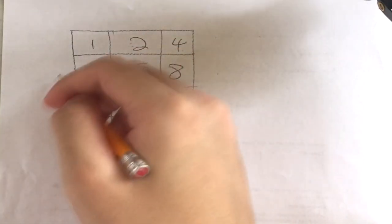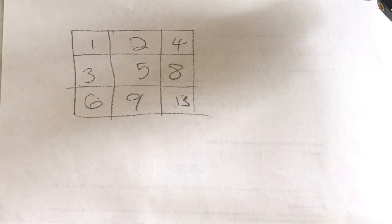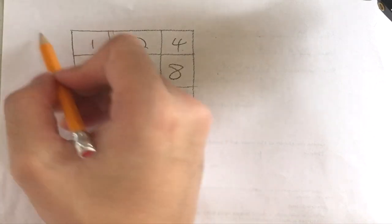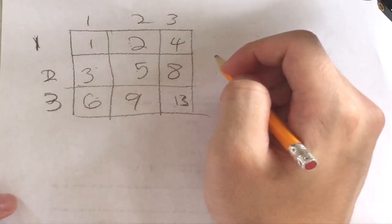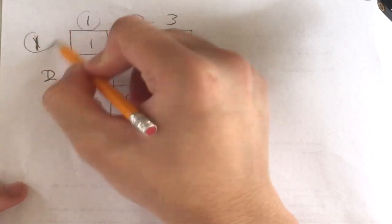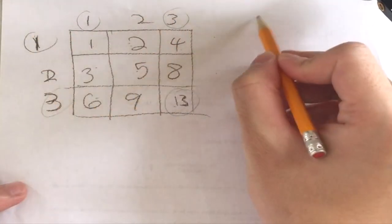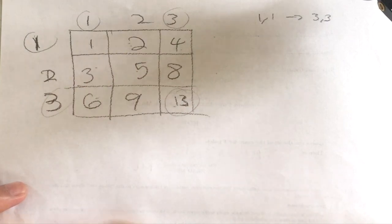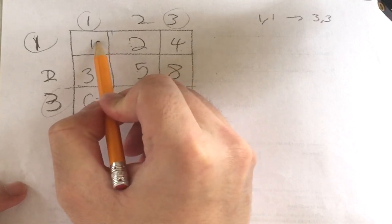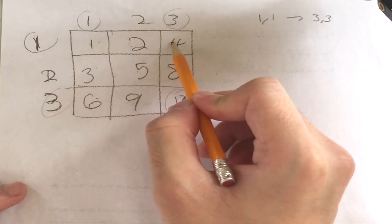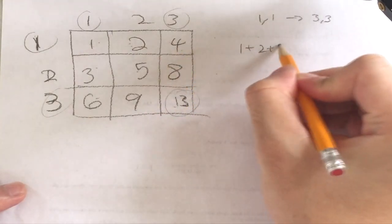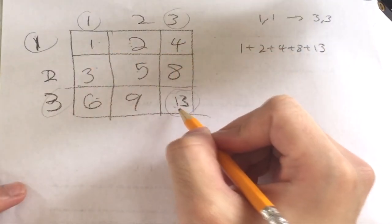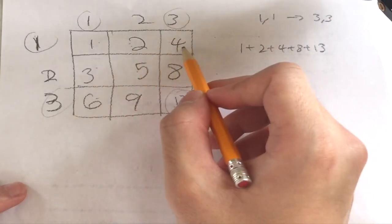Now let's think about ways to go from one cell to another. Starting at cell (1,1), let's find the sum of paths going from (1,1) to (3,3). If we go all rights first and then all downs — that is, right, right, down, down — we get 1 + 2 + 4 + 8 + 13. That's one path.